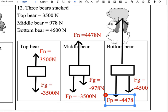And then if we add those two numbers together we get a normal force for bottom bear that is equal to 8978 newtons.